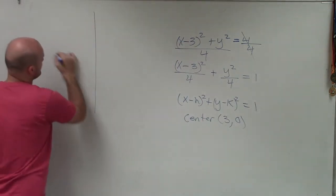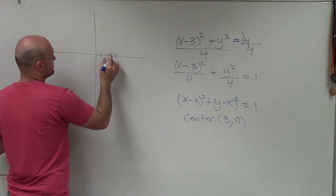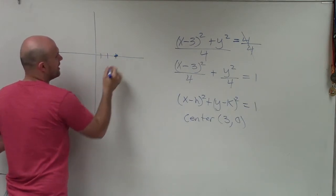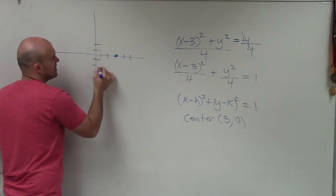I'm going to say 1, 2, 3. And what am I doing? Yeah, 3, 0. And then we know it has a radius of 2, so I'm going to go over 2, up 2, down 2.